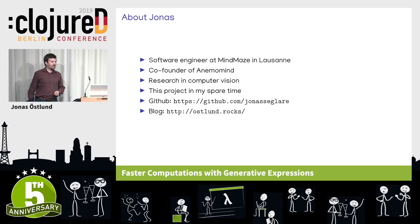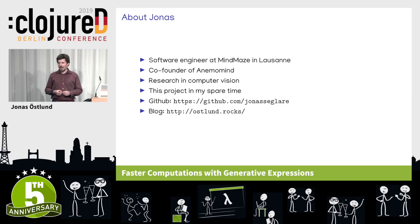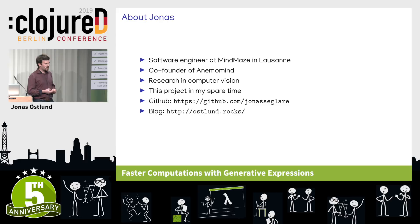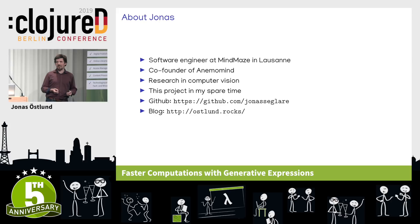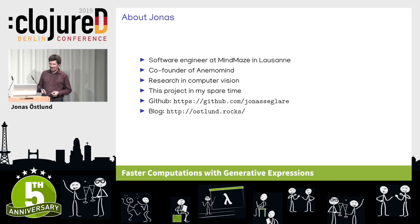Before I start, let me say a few words about myself. I currently work as a software engineer at Mindbase, which is developing technology for neuroscience. I am also the co-founder of Anemomind, which uses algorithms to make sense of data captured by sensors on sailboats. In the past, I used to work as a researcher in computer vision, and that was when I got interested in Clojure and code generation because I was dissatisfied with the tools I was using at the time.